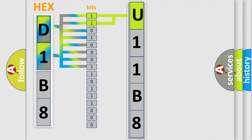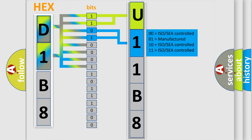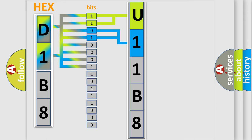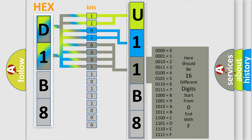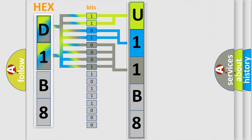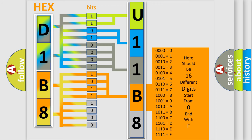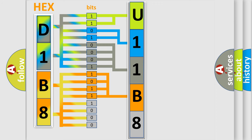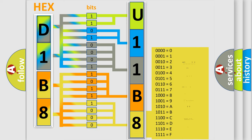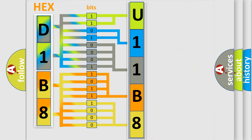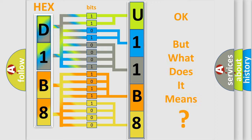The next two bits determine the second character. The last bits of the first byte define the third character of the code. The second byte is composed of a combination of eight bits. The first four bits determine the fourth character, and the combination of the last four bits defines the fifth character. A single byte conceals 256 possible combinations. We now know in what way the diagnostic tool translates the received information into a more comprehensible format.